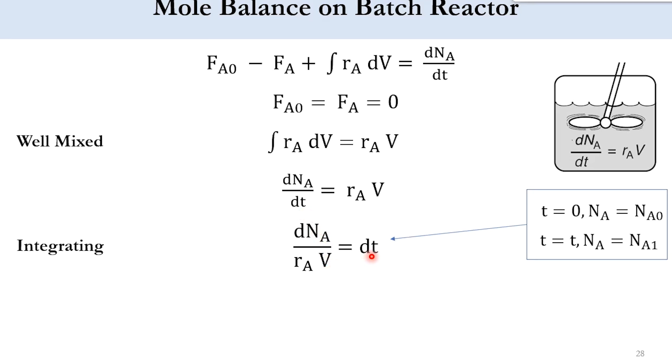Taking terms to one side, we get d n_a over r_a V equals dt. Now applying the limits and integrating it, the limits are at time t equals zero, number of moles of a equals initial number of moles which is n_a naught, while at some time t, n_a equals n_a1. Obviously these number of moles have consumed and product b has produced. So accordingly we get t equals integral n_a naught to n_a1 d n_a over r_a V.